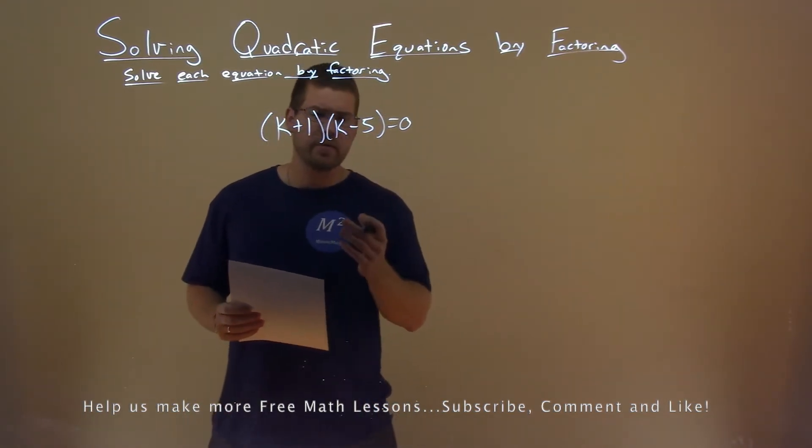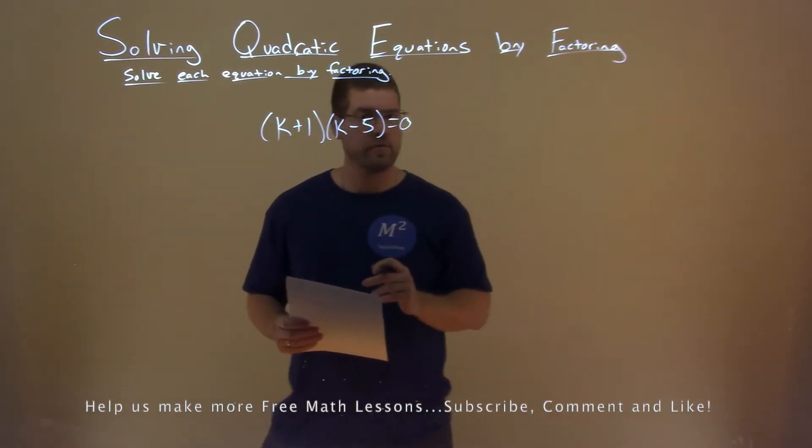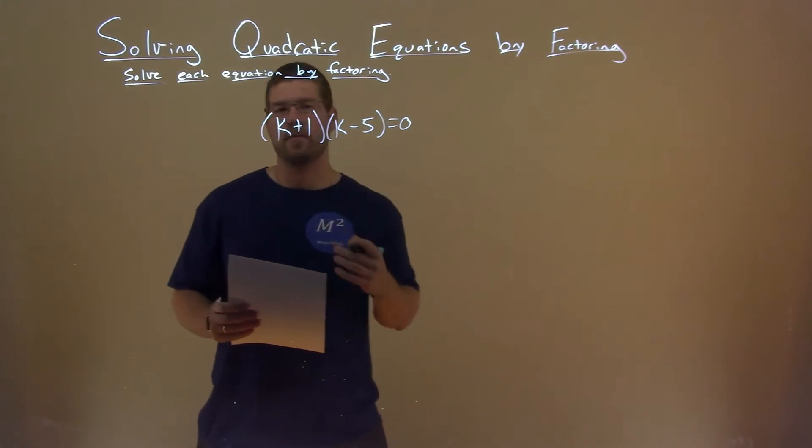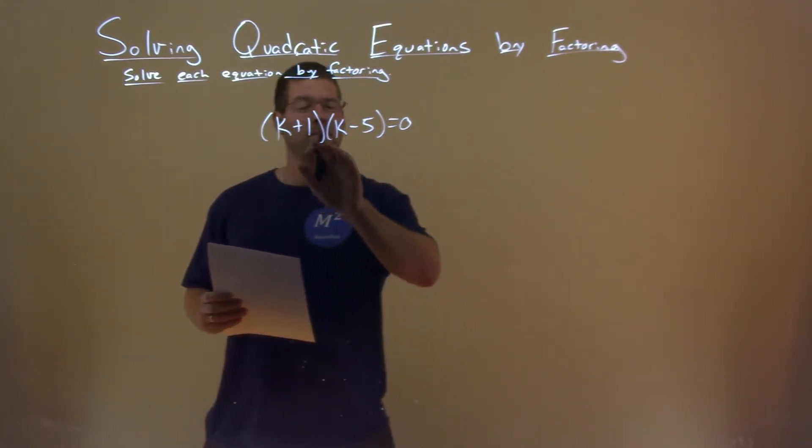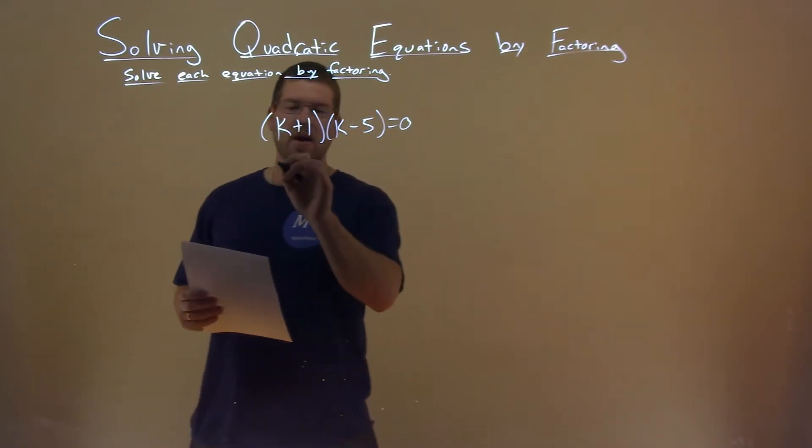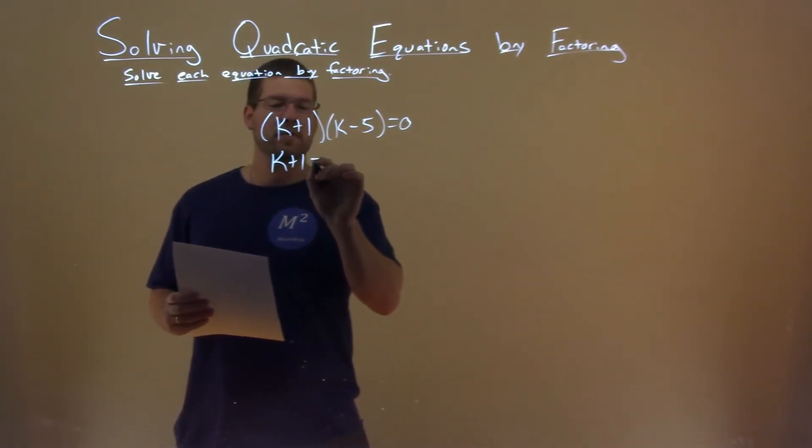Well, luckily for us, this is already in factored form: (k+1)(k-5). Since we have both parts being multiplied and equal to 0, we can set both parts equal to 0.